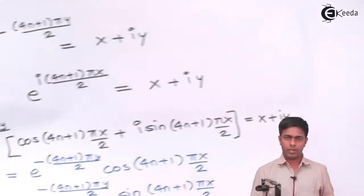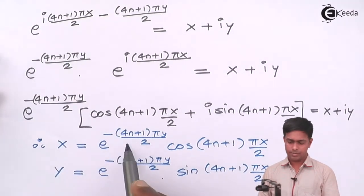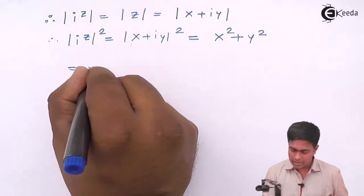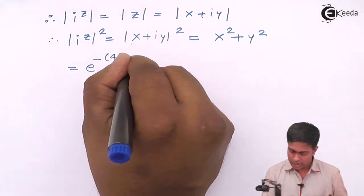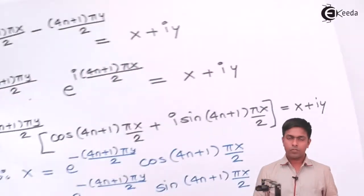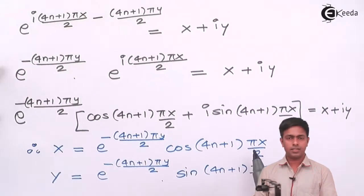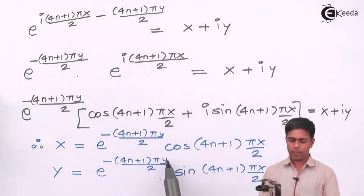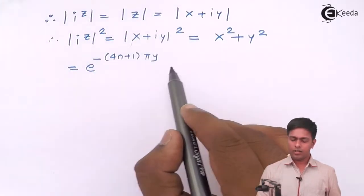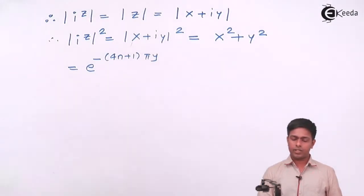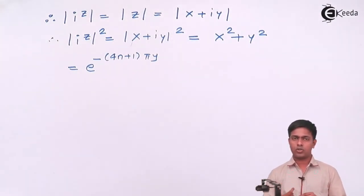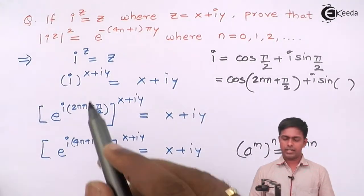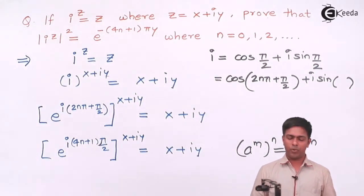Now x² plus y² equals the square of x plus the square of y. Squaring x: the factor of 2 in the denominator cancels, giving e^(−(4n+1)πy)·cos²((4n+1)πx/2). Squaring y similarly gives e^(−(4n+1)πy)·sin²((4n+1)πx/2). Factoring out e^(−(4n+1)πy), and using cos²θ + sin²θ = 1, we get e^(−(4n+1)πy), which is exactly the result to be proved.